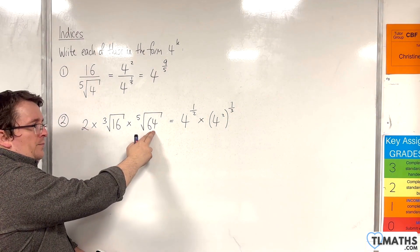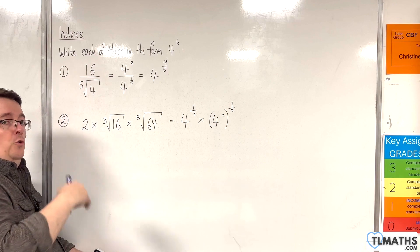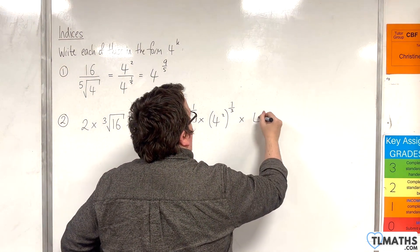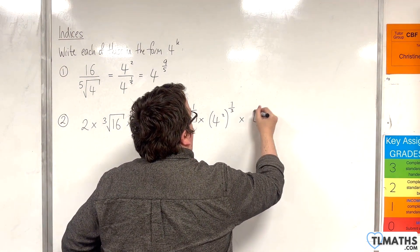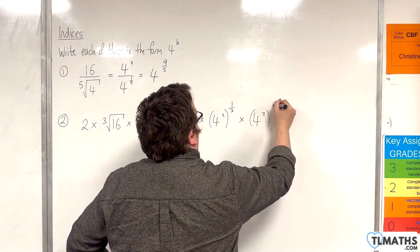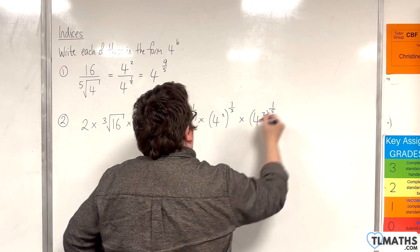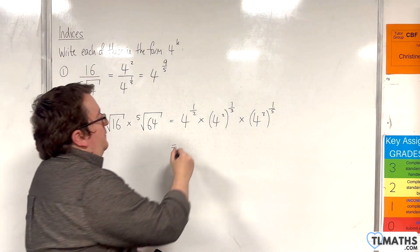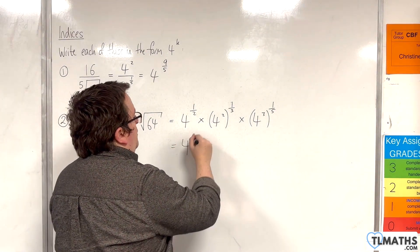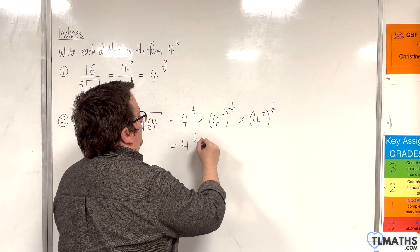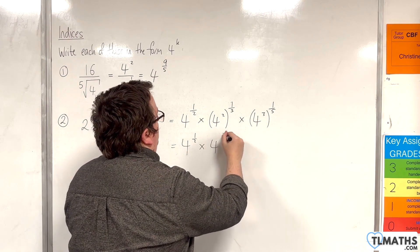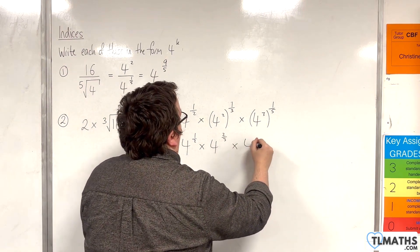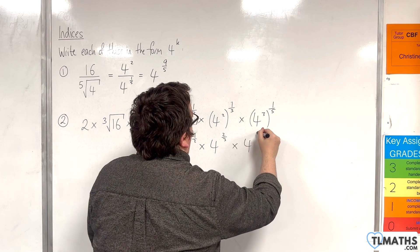64 is 4 cubed, and we're finding the 5th root of that. So, we have 4 to the power of 1 half, times by 4 to the power of 2 thirds, times by 4 to the power of 3 fifths.